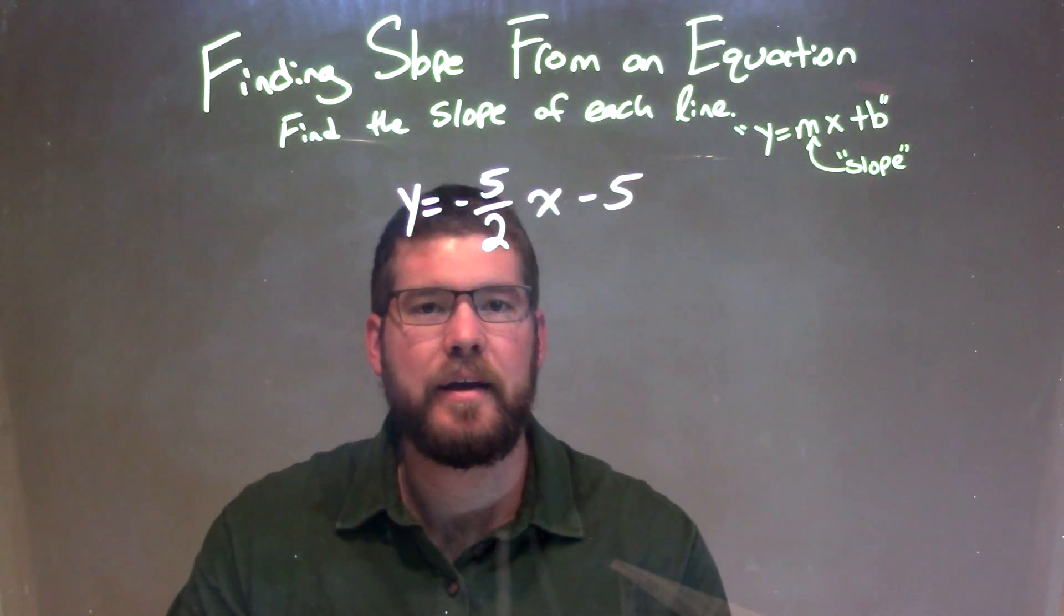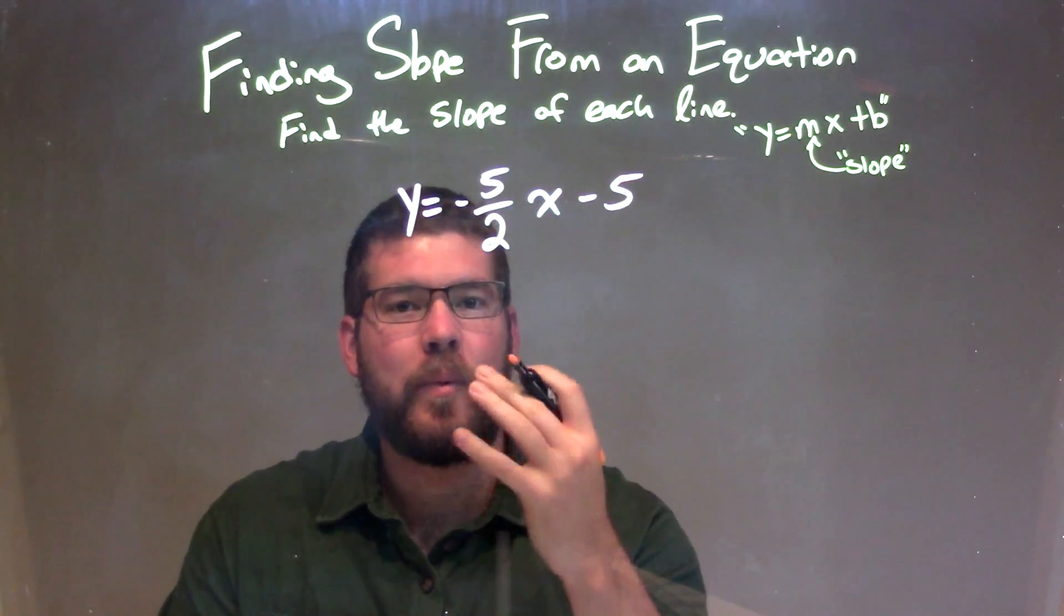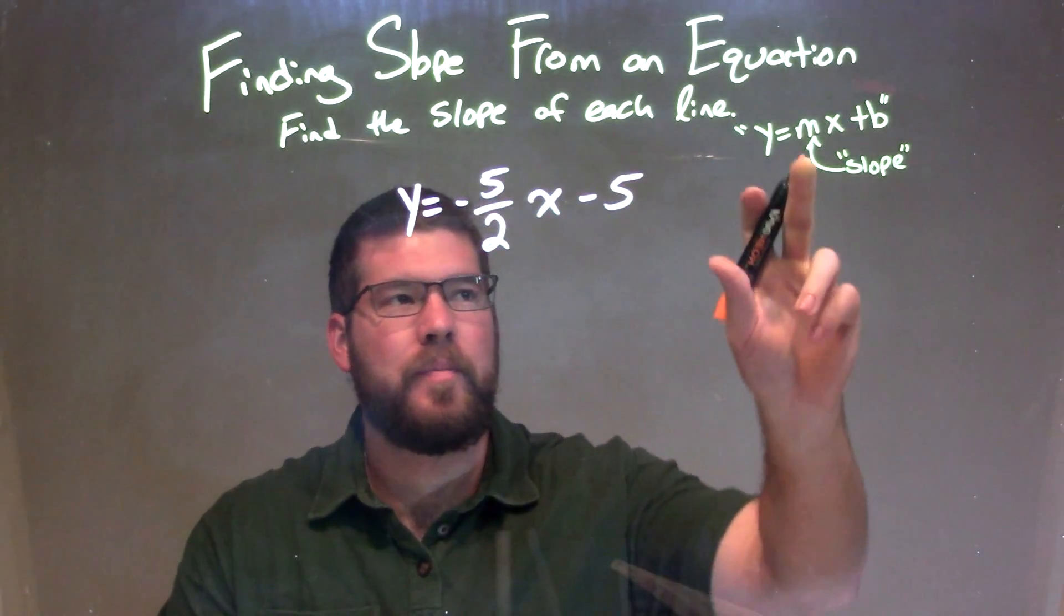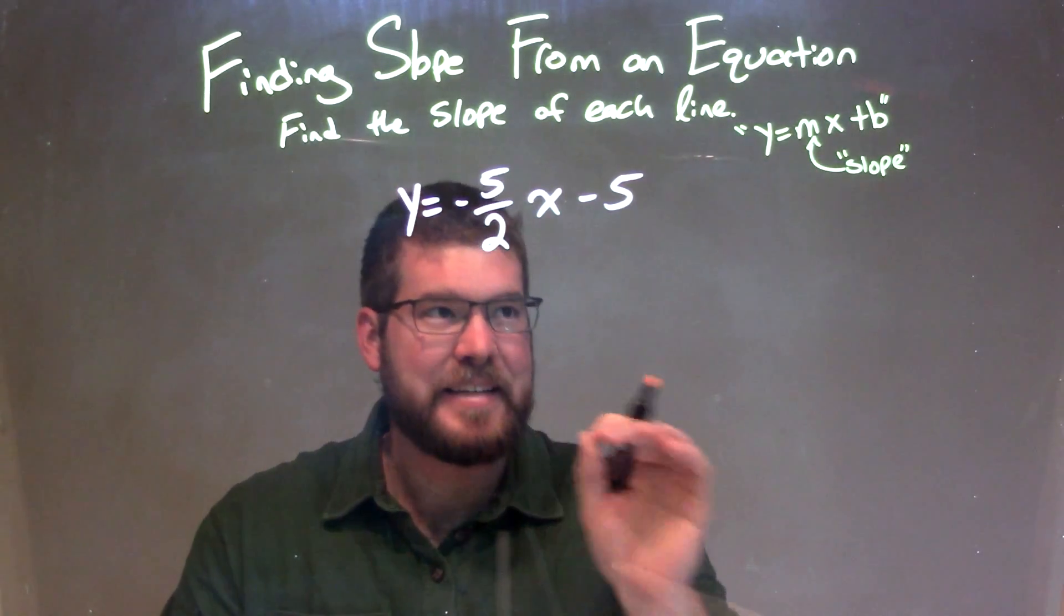well the key here is, I want to see if I can get it into what we call slope-intercept form, that form that's right there. Then we can identify the slope.